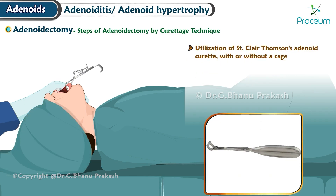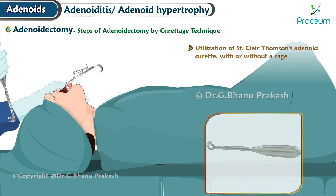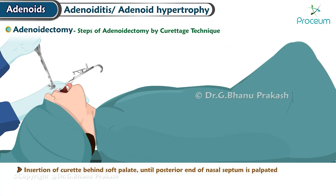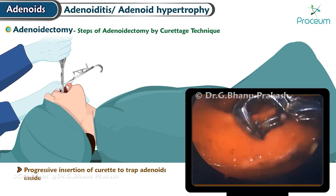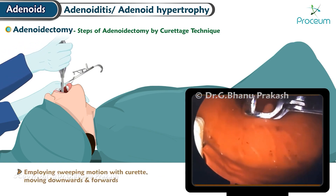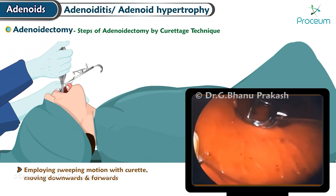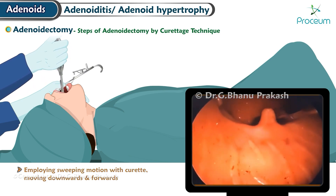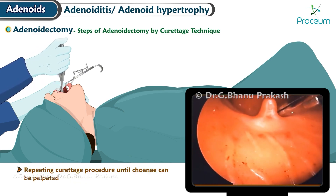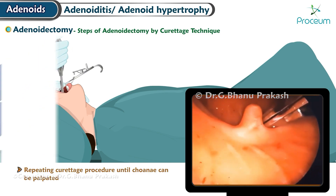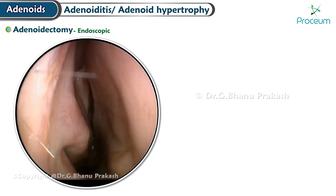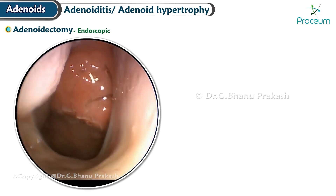Continuing curettage steps: (6) Utilization of St. Clair Thompson's adenoid curette, with or without a cage. (7) Insertion of the curette behind the soft palate until the posterior end of the nasal septum is palpated. (8) Progressive insertion of the curette to trap the adenoids inside, employing a sweeping motion moving downwards and forwards. (9) Repeating the curettage procedure until the choana can be palpated as being clear.